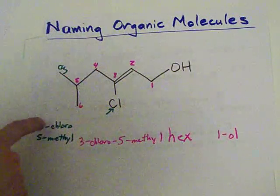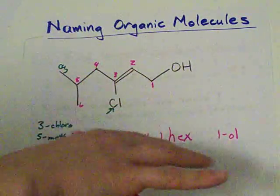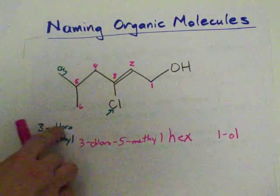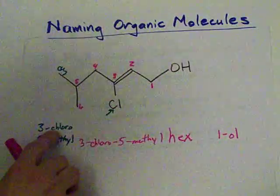Those di, tri, tetra prefixes don't get included when you're putting these in alphabetical order. It's just the raw root of whatever the side chain is. Chloro before methyl.